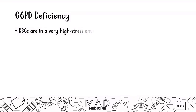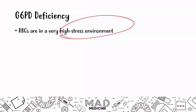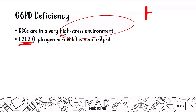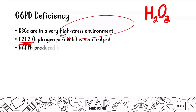Let's talk about the pathogenesis — how patients' red blood cells become more susceptible to oxidative stress. Normally, our red blood cells are in a very high-stress environment. There's carbon monoxide, oxygen, and even hydrogen peroxide in the blood, and hydrogen peroxide is the main culprit. It can lead to a lot of oxidative stress on our red blood cells. Luckily, we have a mechanism to prevent this through a molecule called NADPH.